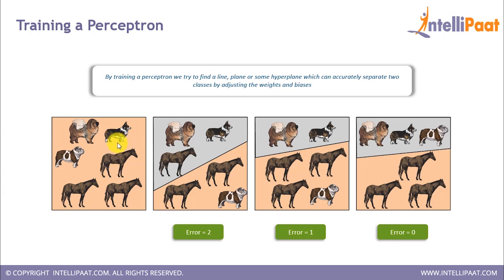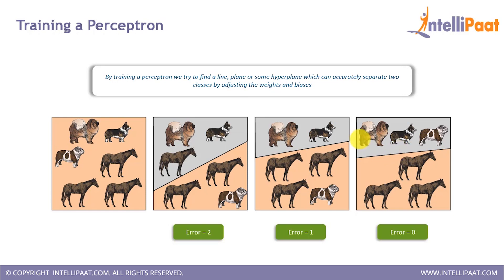Consider an example where we give dogs and horses as input. After the first iteration, the error value is 2, since one horse has been classified as a dog and one dog has been placed in the horses' class. In the second iteration, the error is reduced to 1 — only one dog is misclassified as a horse. Finally, in the third iteration, we get the correct output with no error: all dogs are in one class and all horses in another.